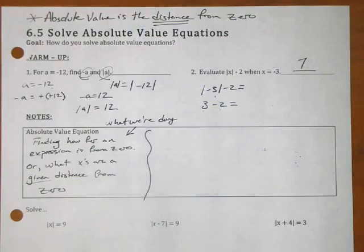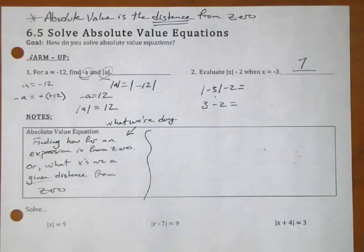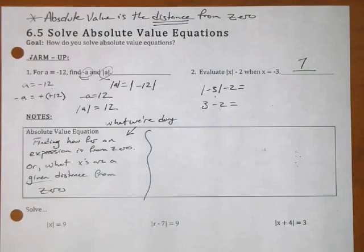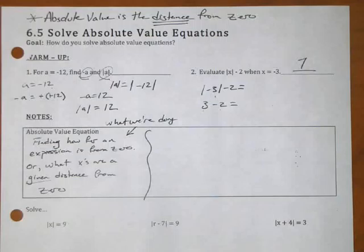What x's are a distance of three from zero? You can start at zero and go one, two, three — you could go to the right. Or you could go to the left. I'm not trying to patronize you, but this is exactly what we're doing. When I crank up the complexity and start changing things on the inside, you're always coming back to: what values are a distance of this number from zero? No matter how crazy this may look, we're looking at what values are this distance from zero.